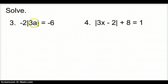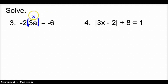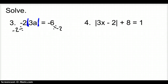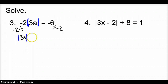Now we're going to solve for the variable inside the absolute value. The very first thing we want to do is get our absolute value all by itself. You could treat whatever is inside the absolute value like a variable x. So how do I get this negative 2 away from the absolute value? It is attached through multiplication, so we divide by negative 2. On the left side, we bring down what's inside: 3a equals positive 3.